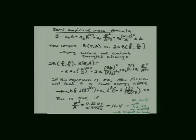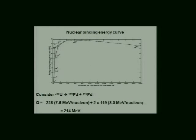Everything heavier than about mass 110 is unstable with respect to fission in principle — but that doesn't mean it happens at a large rate. No one has ever seen a nucleus down near mass 110 fission. As you go to higher masses, fission half-lives get shorter and shorter. The barrier is what inhibits spontaneous fission. If Z²/A reaches about 47–49 (depending on the values used for the surface and Coulomb coefficients), then there's essentially no barrier to prevent fission at all.